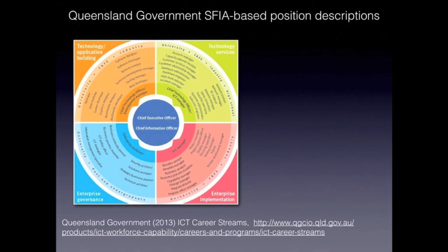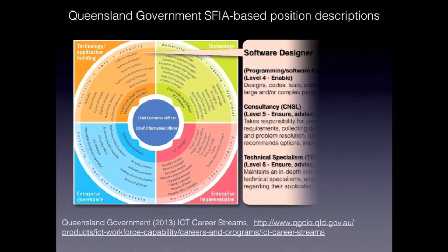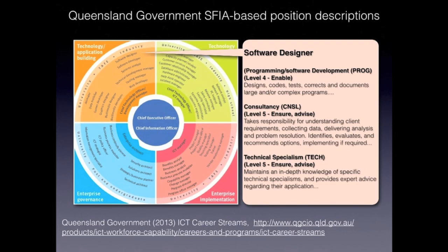Several good starting points are available. For example, the Queensland Government has defined a range of ICT positions based on SFIA. These positions span four quadrants: technology application building, technology services, enterprise implementation, and enterprise governance. They define the software designer position to include three SFIA skills: programming software development at level 4, or enable, and consultancy and technical specialism, both at level 5, which is ensure and advise.